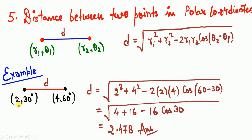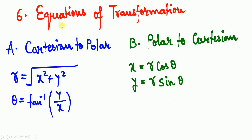For example, two polar coordinate points are (2, 30°) and (4, 60°). Substituting: d equals the square root of 2² + 4² minus 2×2×4×cos(60° − 30°), which gives approximately 2.478. Please verify this value and type your answer in the comment box to build confidence.